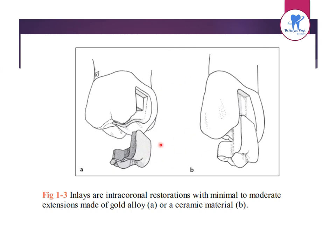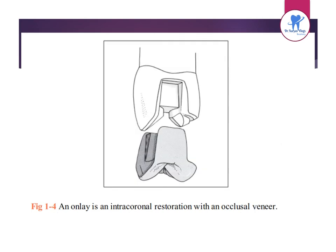These are inlays — they are intracoronal restorations with minimal to moderate extensions, made of gold alloy or ceramic material. An onlay is also an intracoronal restoration but with an occlusal veneer.